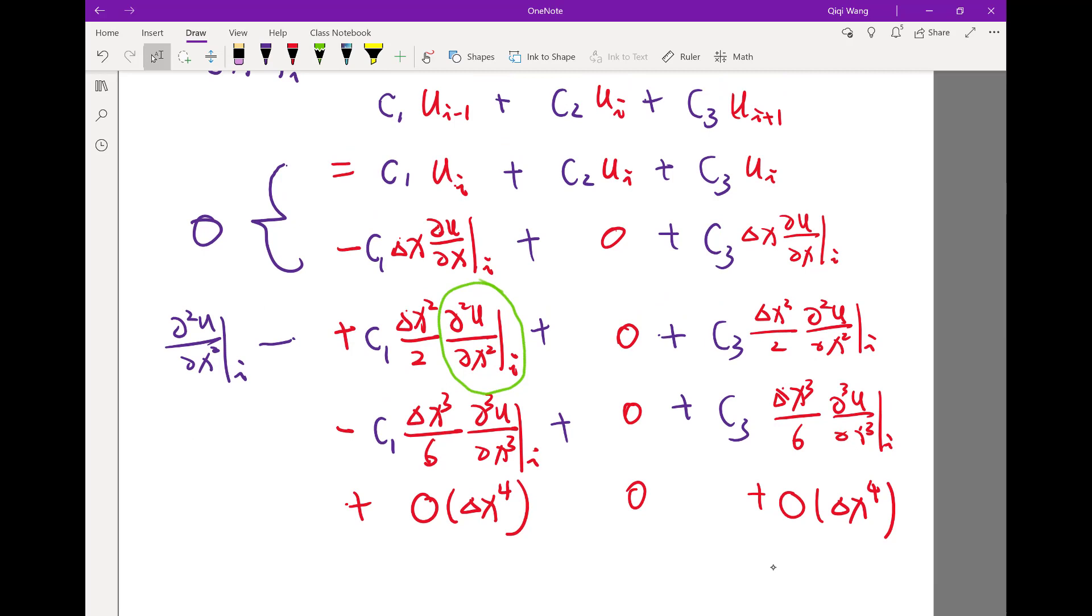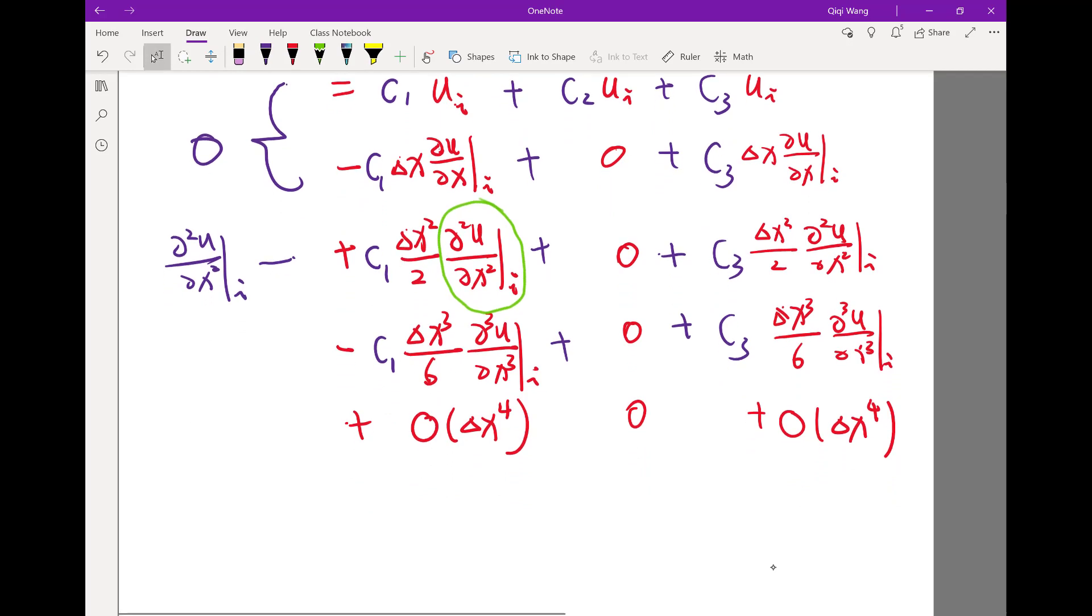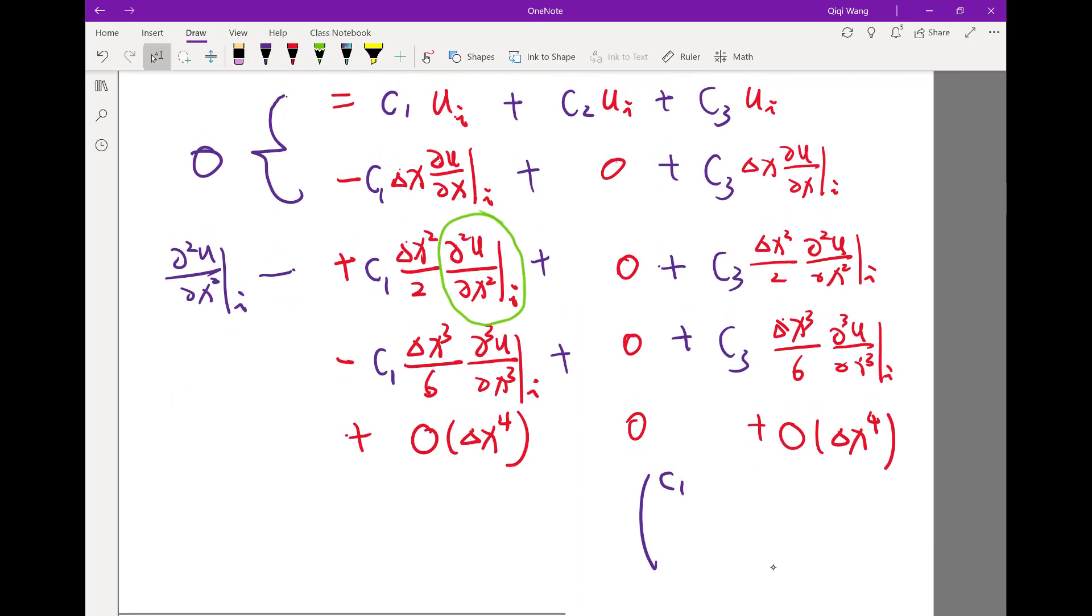In this case, the right hand side of the matrix is C1, C2, C3. I want a matrix that is multiplied by C1, C2, C3. Let me, because everything is multiplied by delta x square, let me just say C1 delta x square, C2 delta x square, C3 delta x square. This is my unknown.